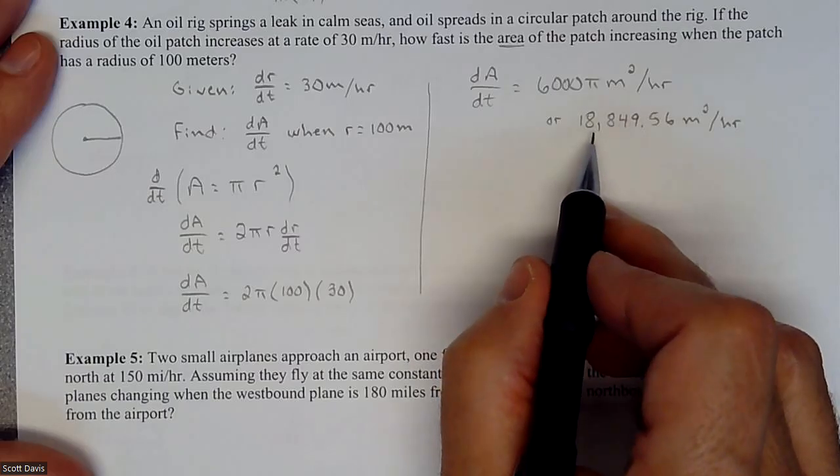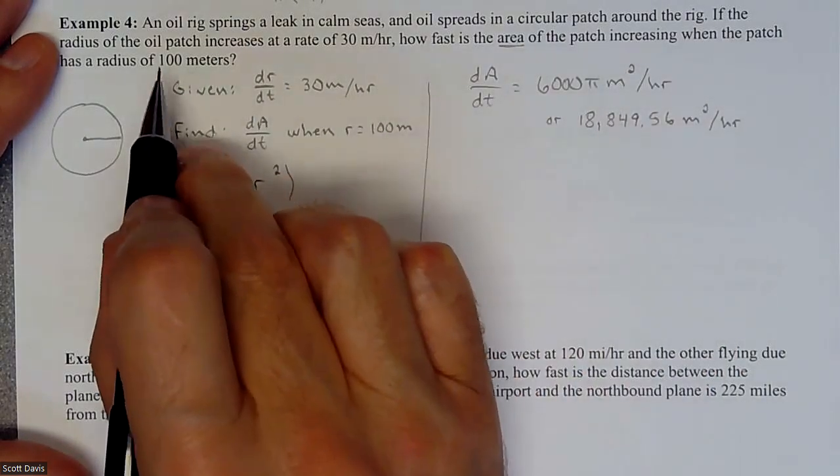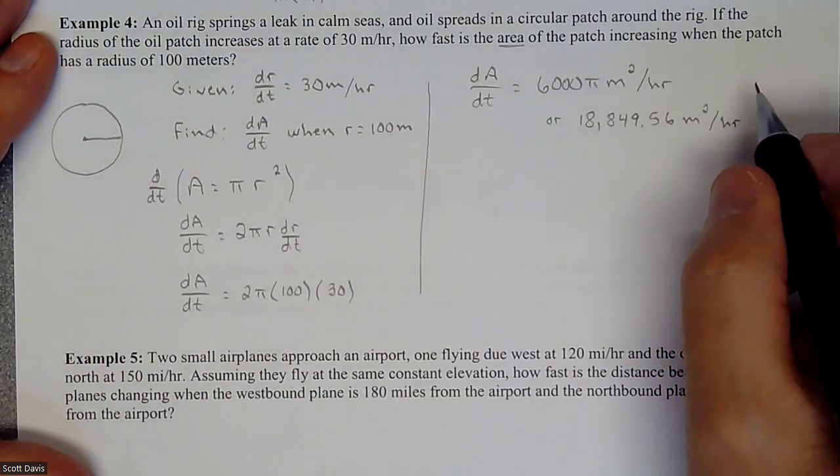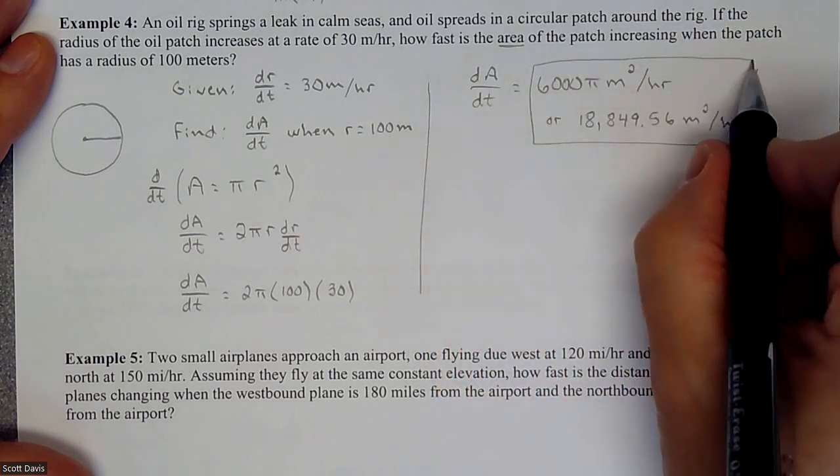That's pretty drastic. That's a lot of square meters at that instantaneous moment is what that was looking for. So that is doing a related rate that involves a circle.